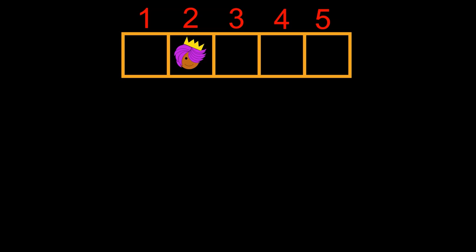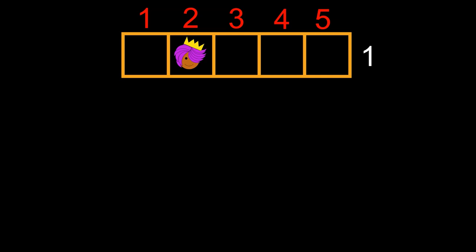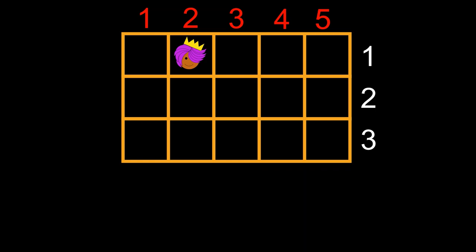So for this puzzle, instead of moving around the princess on a 1D line, let's just make one row for each night. So this row can be night number one. Then we add a second row for the second night, another for night number three, and so on.